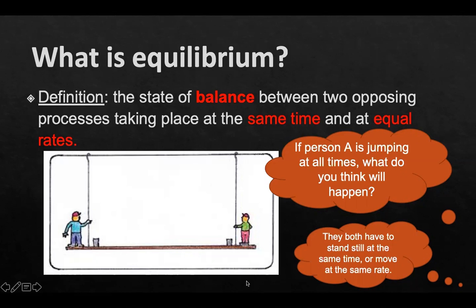This is not at equilibrium. To be at equilibrium, both individuals will have to stay completely still the whole time, or they'll have to move up and down at the same rate. This way, they remain balanced or in equilibrium with one another.